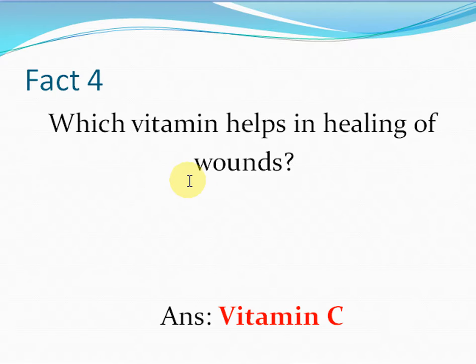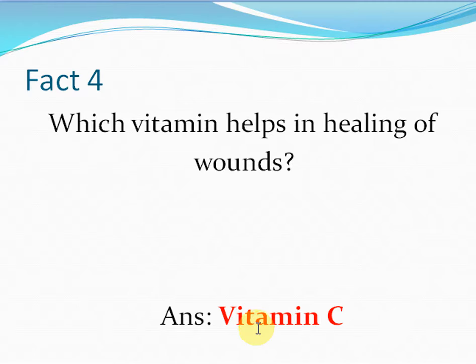Yellow color of urine is due to which pigment? The answer is the yellow color of the urine is due to the presence of urochrome in the urine.